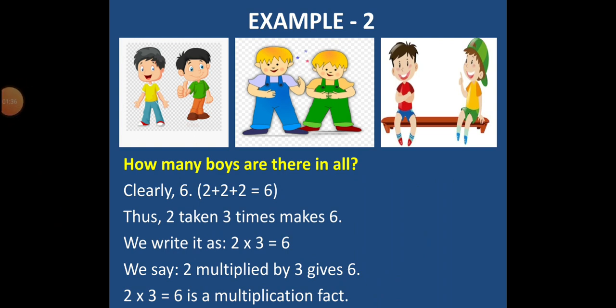Let's take another example. You can see in the picture, these are boys. And how many boys are there in all? Yes, clearly, there are 6 boys in the picture. 2 in each group. 2 plus 2 plus 2 is equal to 6.